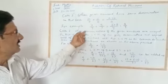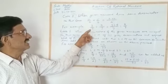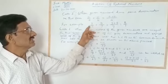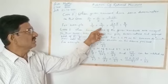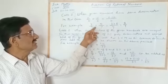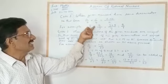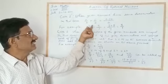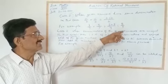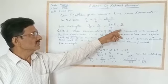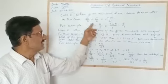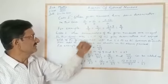For example, we have taken 3/7 plus 5/7. The LCM of 7 and 7 is 7, and we directly add 3 plus 5, which equals 8. So the result is 8/7. This is the result of 3/7 plus 5/7.